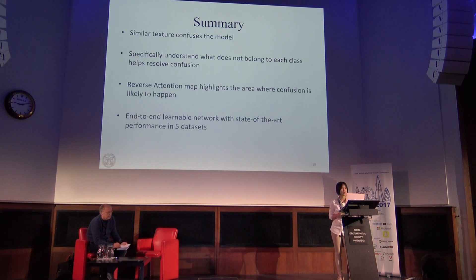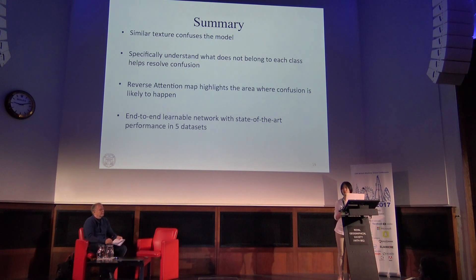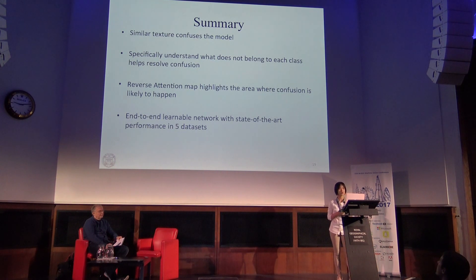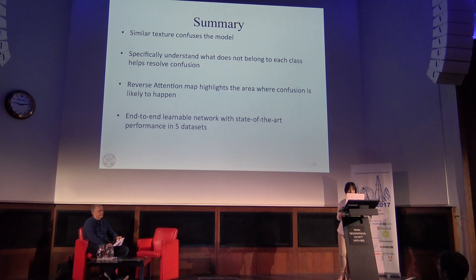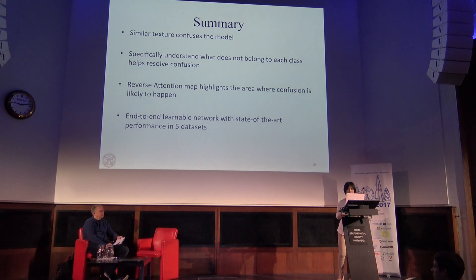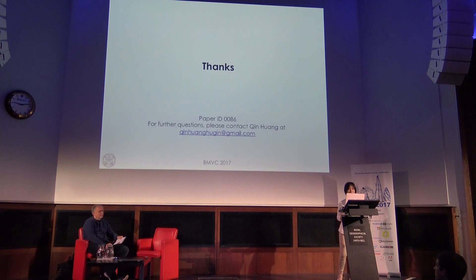To wrap up: first, we observed confusion arising from similar textures across different categories. The solution we propose is to specifically understand what does not belong to a class, which is why we propose the reverse branch. We then added more non-linearity to the system with the reverse attention map, which enhances the area where confusion is likely to happen. Finally, we propose an end-to-end training system, and we managed to get state-of-the-art performance on five different datasets. If you are interested in more details, you can look at the paper — the ID is 86. Thanks.